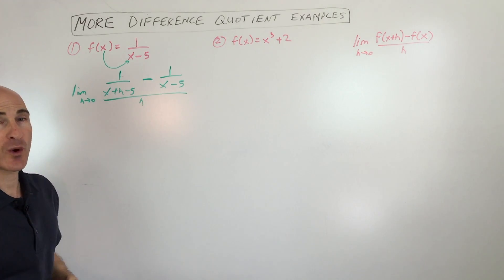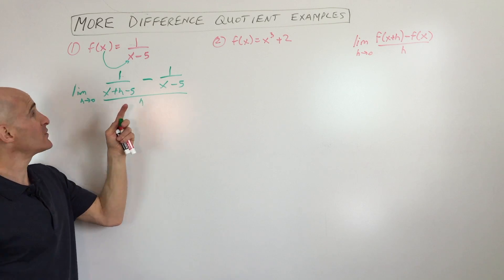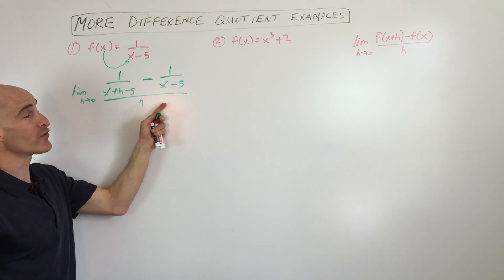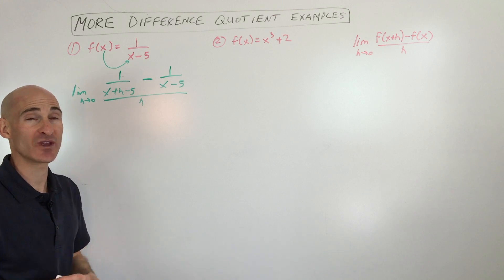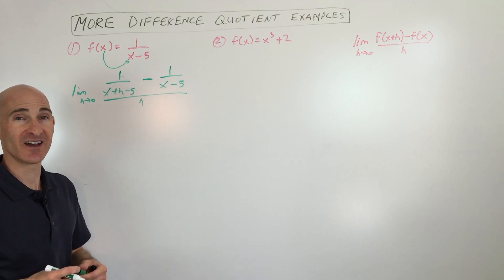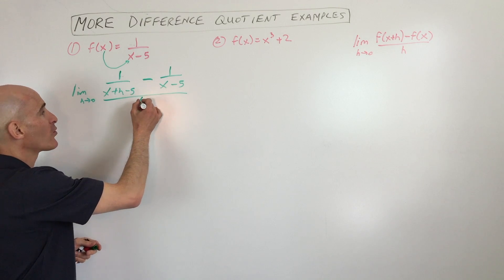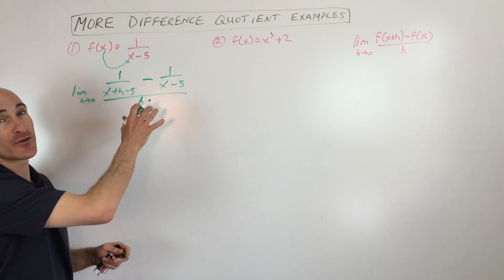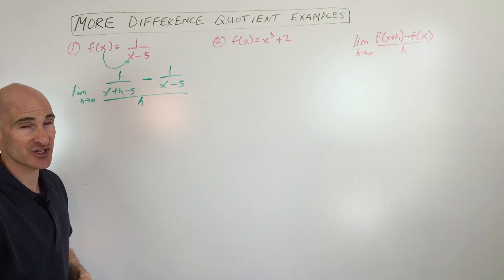Now you don't want to make this mistake — you don't want to put 0 in too soon. If you do, you're going to get 0 over 0, which is an indeterminate form, which means we can't really make any conclusions about this at this point. So what we really want is to simplify this down further before we substitute 0 in for h.